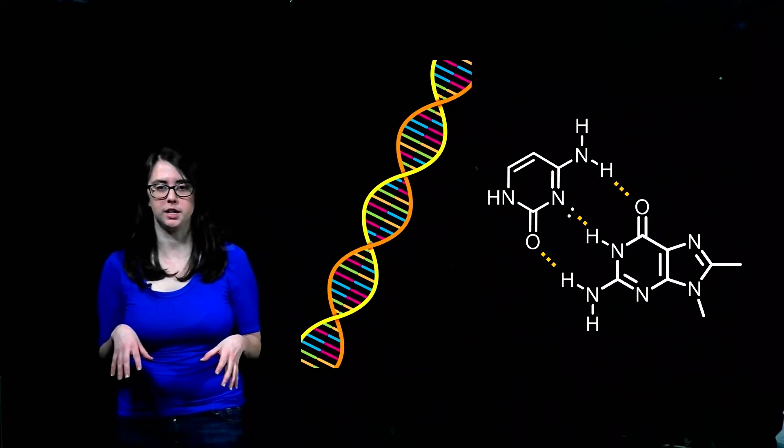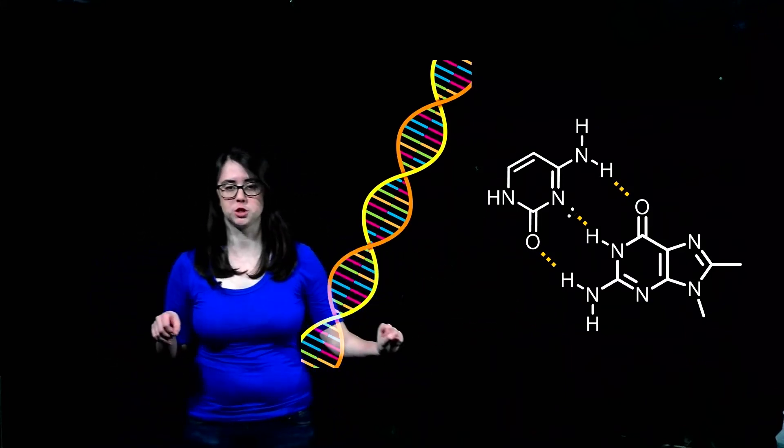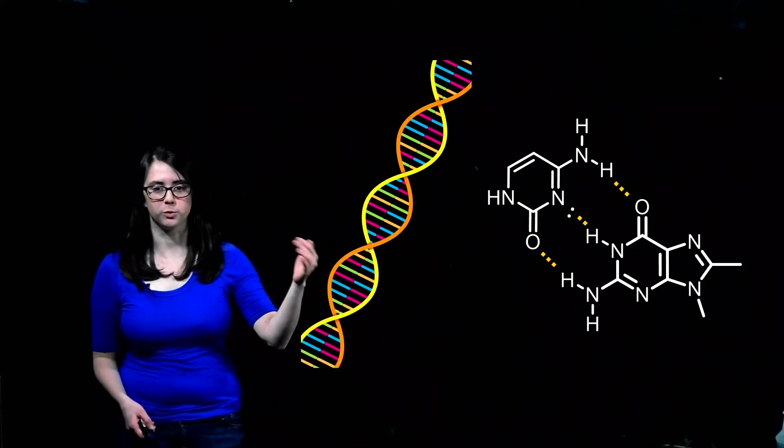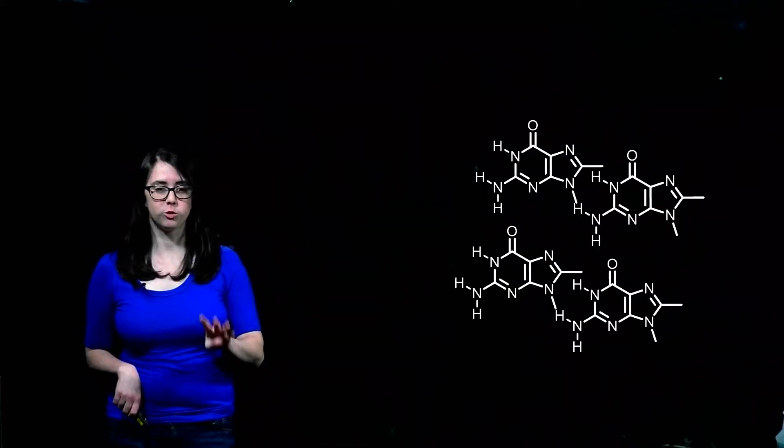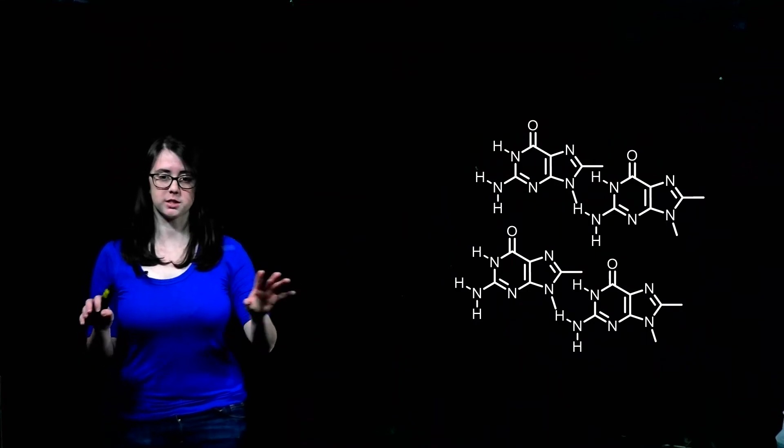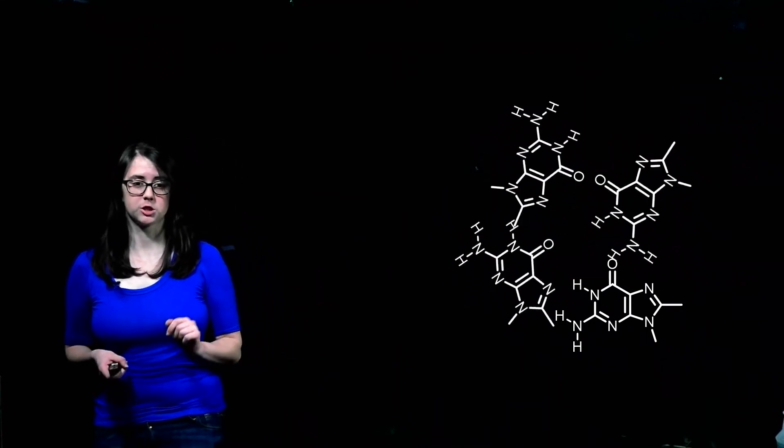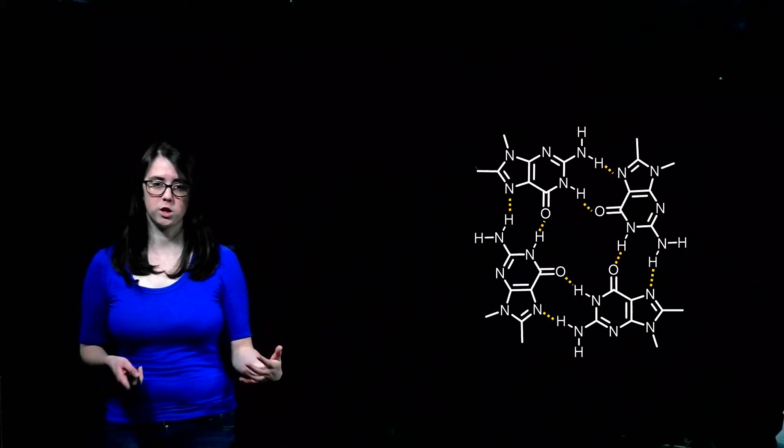Now in DNA, guanine, so the molecule over here, is usually bonded with cytosine. However, there are times when guanine can actually bond with itself. So when you have four guanine molecules that are in close proximity, in certain conditions they're able to undergo hydrogen bonding to create this four-membered structure called a quadruplex.